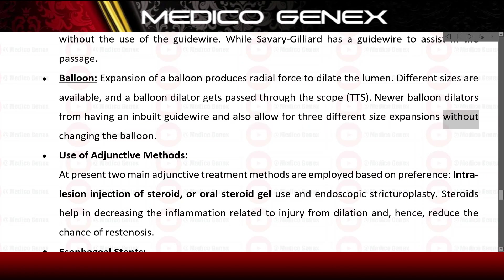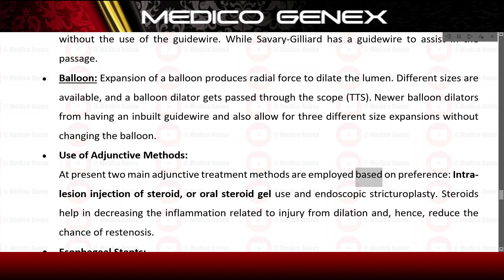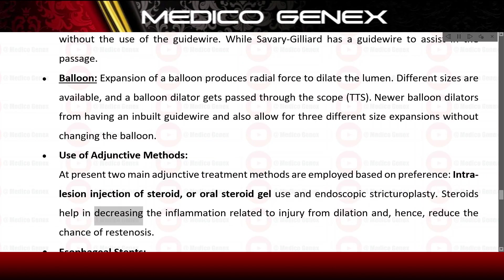Two main adjunctive treatment methods are currently employed based on preference: intralesional injection of steroid or oral steroid gel use, and endoscopic stricturoplasty. Steroids help decrease the inflammation related to injury from dilation and hence reduce the chance of restenosis.